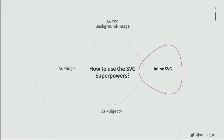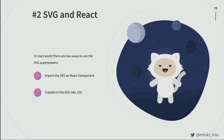How do you use these superpowers of the SVG? You can use it as a background image with the image tag. But if you want to use the best things of SVG — to modify it and use it with CSS — you have to use it inline, meaning exposing the code in the DOM. To use SVG with React, you have two ways: if you use something like SVGR or Create React App, you can import the SVG as a React component. The other way is to grab the SVG file and transform it into JSX.